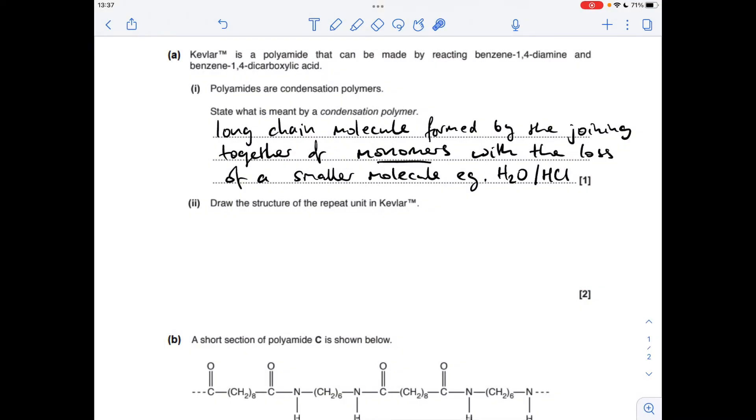So it starts with the definition, what's meant by the term condensation polymer? So there's a couple of things we need to say here. The polymer bit is the fact that it's a long chain molecule that's been formed by the joining together of monomers. The condensation bit is when it joins together there's a loss of a smaller molecule, example water or HCl.